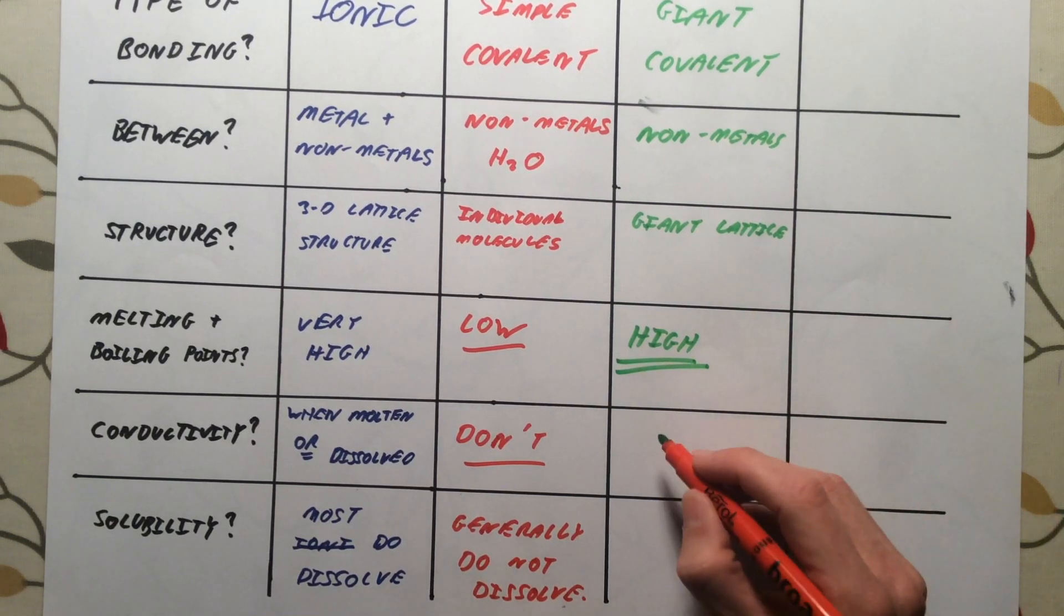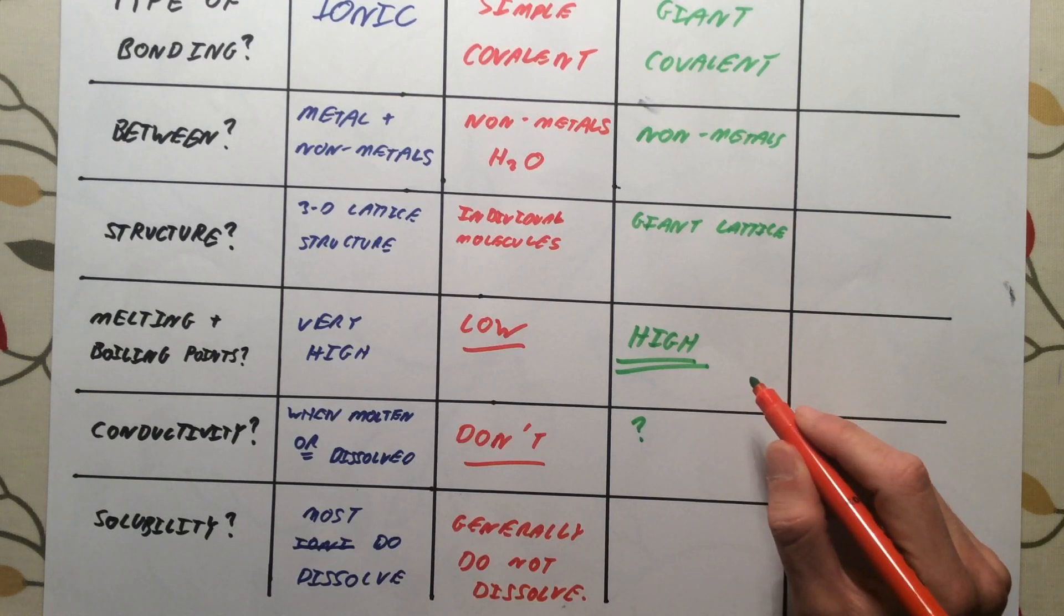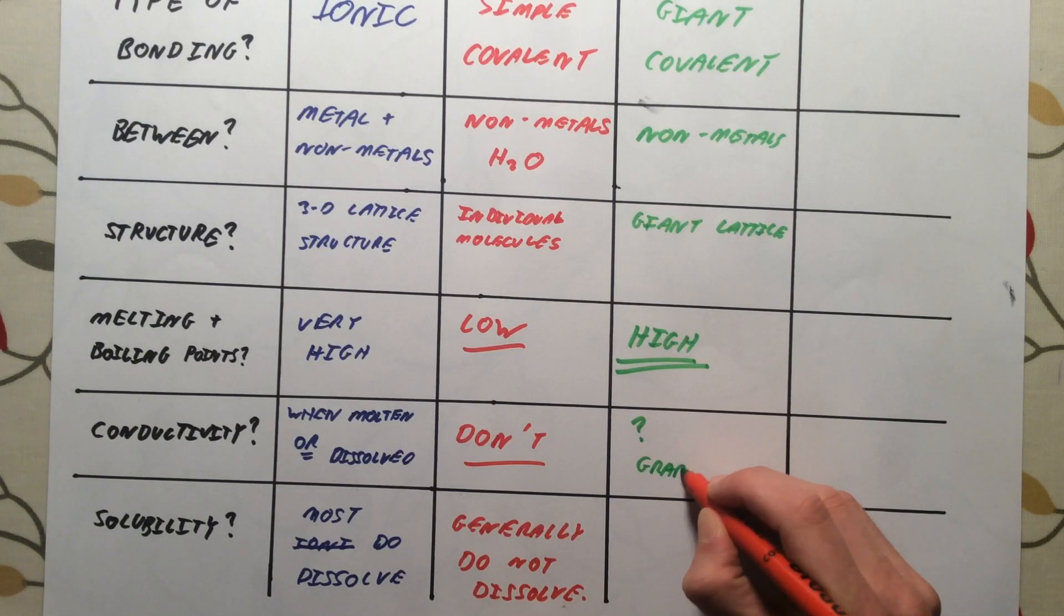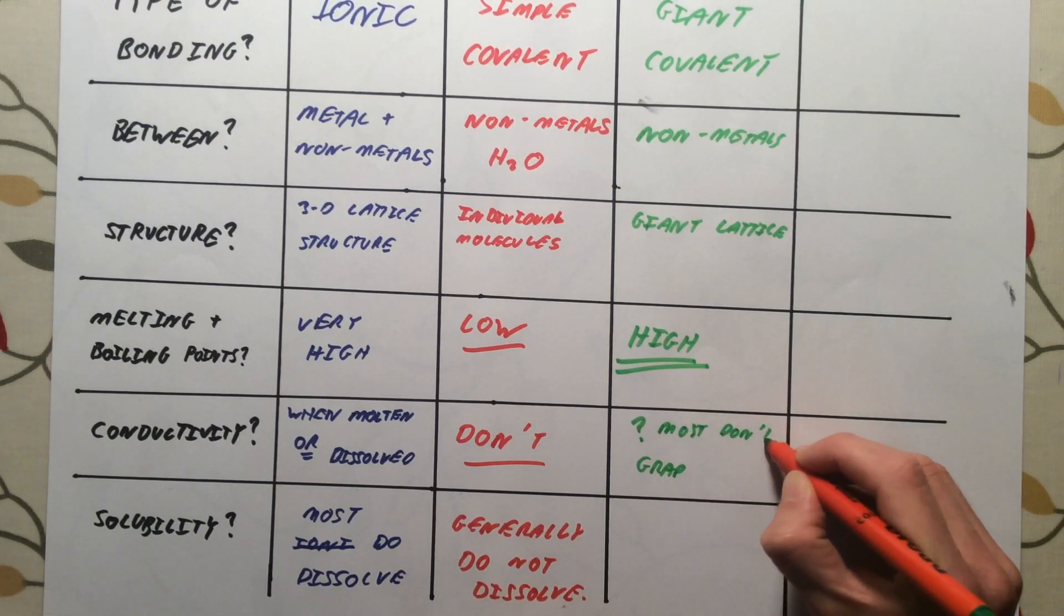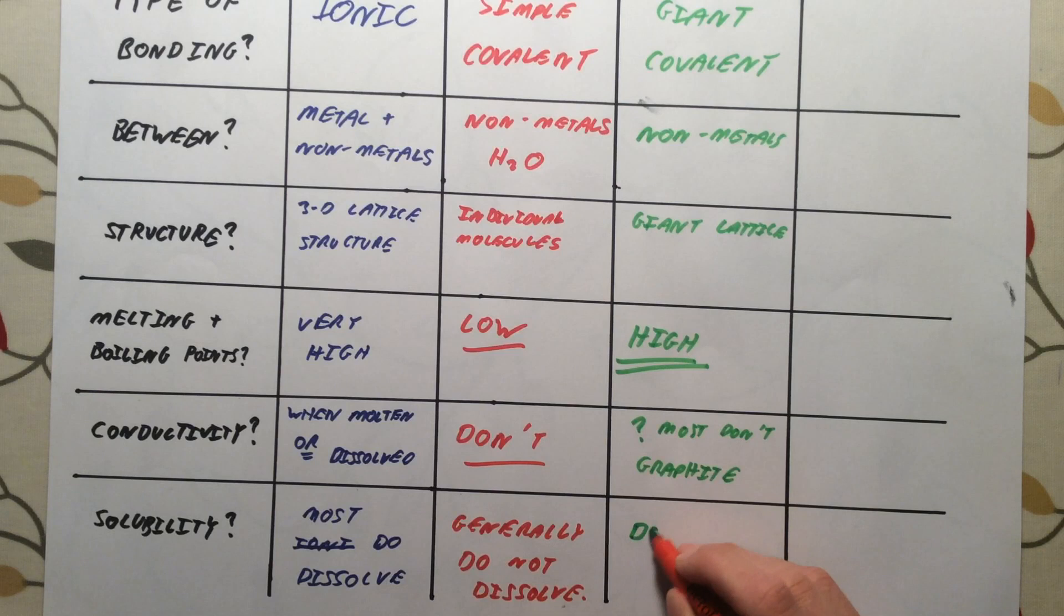Conductivity. Depends. Diamond doesn't. Silicon dioxide doesn't. Graphite does. So, most don't. Graphite does. Solubility. They do not dissolve in water.